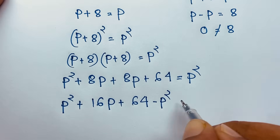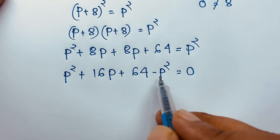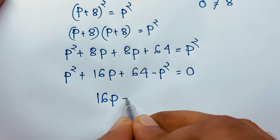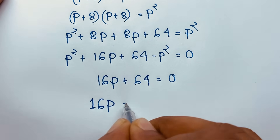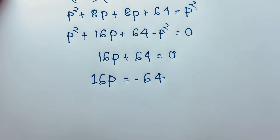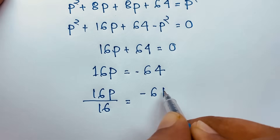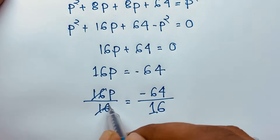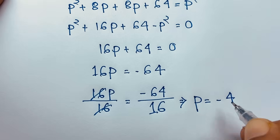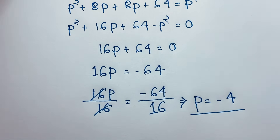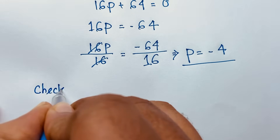Now if I move this P² to the other side it becomes negative P², so the two P² terms cancel out — the positive and negative cancel — and we find 16P + 64 = 0. Moving 64 to the other side gives 16P = -64. Dividing both sides by 16, we find P = -64/16, which gives us our final answer: P = -4.